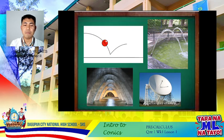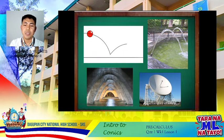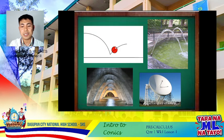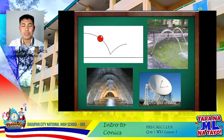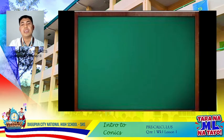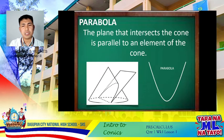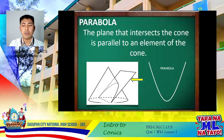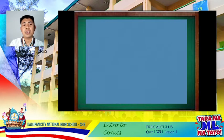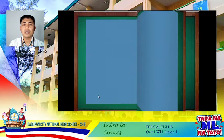With the next type of conics, these figures all have parabolic shapes. When you throw a ball, the trajectory it takes is a parabola. We have a satellite dish, a tunnel, and a fountain — all parabolic in shape. These are real-life examples of parabolas. Parabolas form when the plane that intersects the cone is parallel to an element of the cone, or when the plane intersects only one cone to form an unbounded curve.